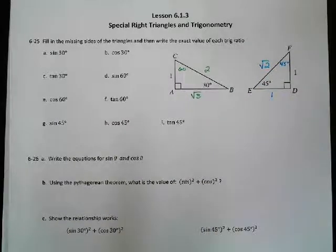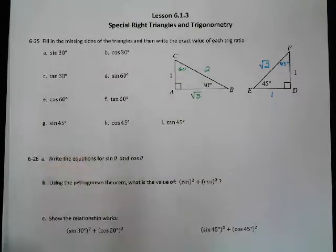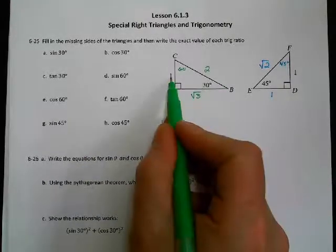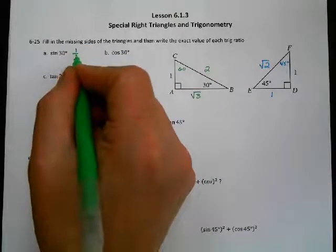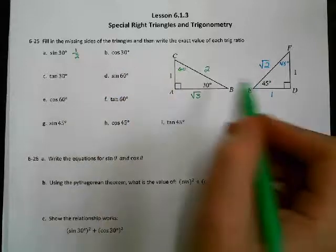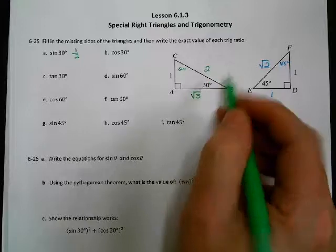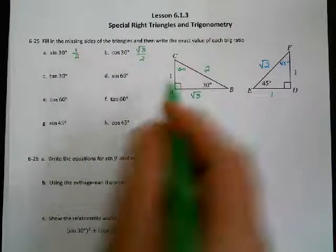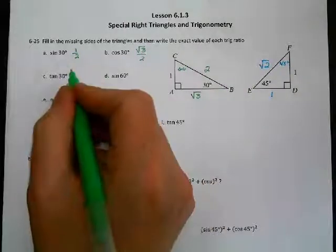Now we're going to find the sine, cosine, and tangent of 30, 60, and 45 using these numbers. For sine of 30, we use opposite over hypotenuse, so that's 1 over 2. Cosine of 30 is adjacent over hypotenuse, so that's root 3 over 2. Tangent of 30 is opposite over adjacent, so that's 1 over root 3.